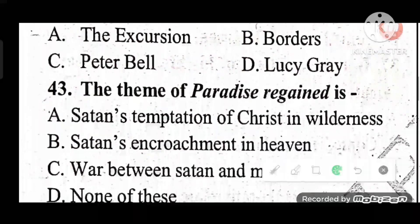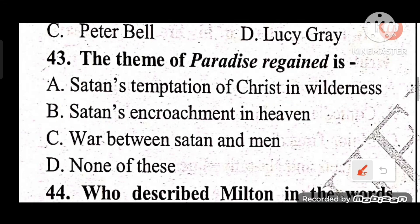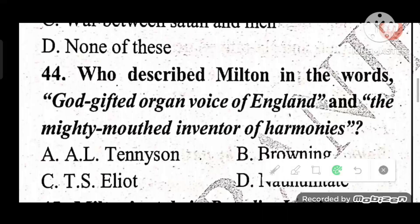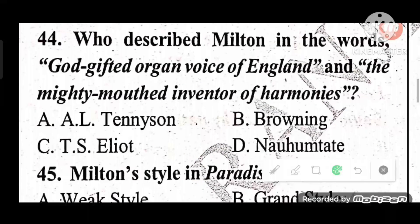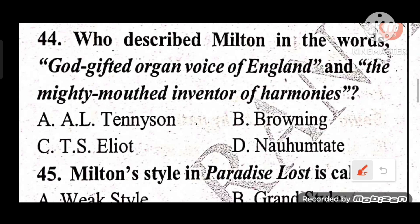Question 43: What is the theme of Paradise Regained? The answer is A — Satan's temptation of Christ in the wilderness. Question 44: Who described Milton with the words 'God-gifted organ-voice of England' and 'the mighty-mouthed inventor of harmonies'? The answer is A — Alfred Lord Tennyson described Milton in those words.